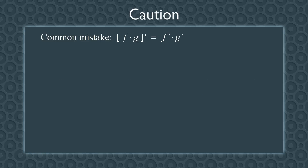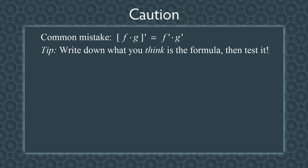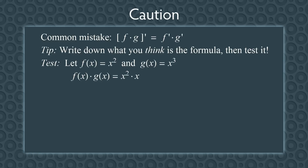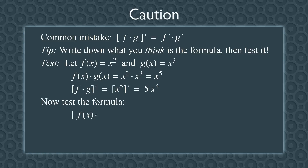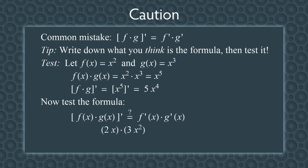So how do you avoid making this mistake? Write down what you think the formula is, then test it with two simple polynomials. Let f(x) = x² and g(x) = x³. Then f(x) times g(x) = x⁵, so the derivative is 5x⁴. Now test the wrong formula: f′ is 2x, g′ is 3x², and 2x times 3x² is 6x³ — which is different from 5x⁴. So the formula f′g′ is wrong. Whenever working from memory, it's a good idea to quickly test the product formula to make sure it's right.